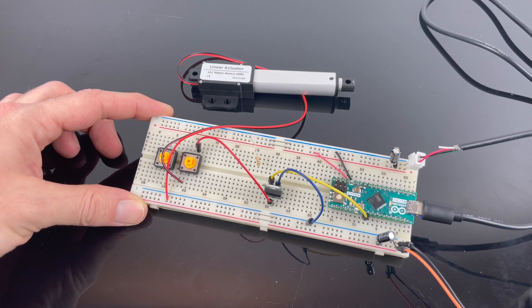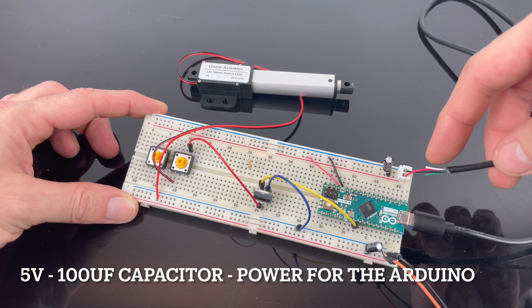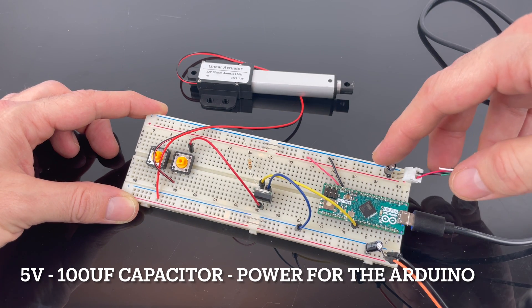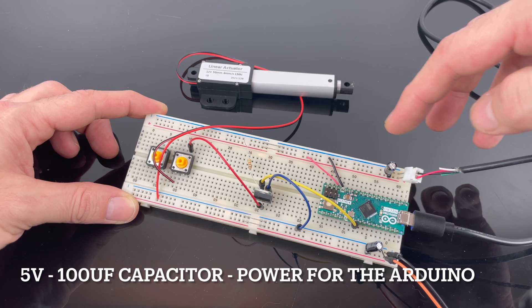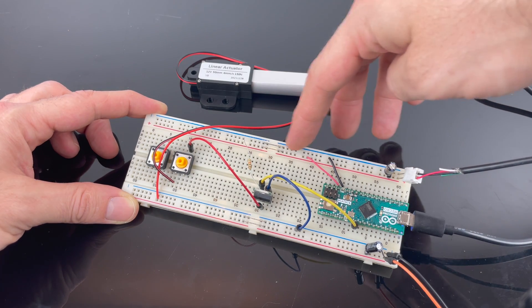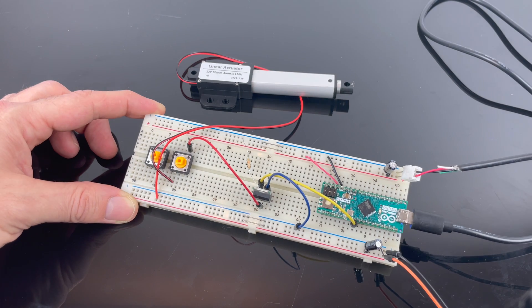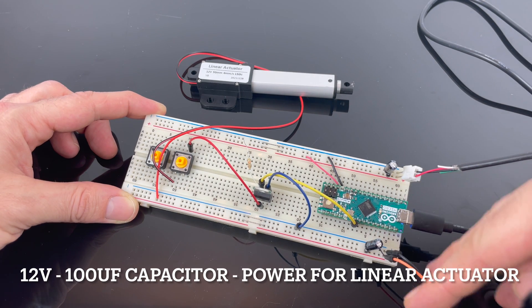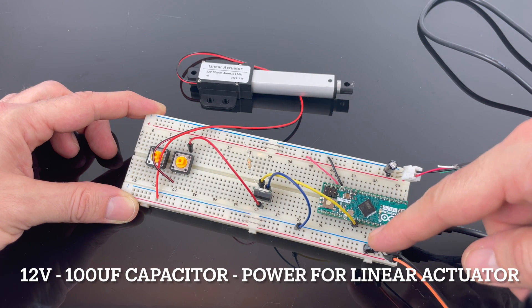First of all we got five volts coming in here. I got a capacitor here 100UF just to protect from spikes. So we got five volts running down this side on the breadboard. On this side we get 12 volts and there is also a capacitor here for 100UF.